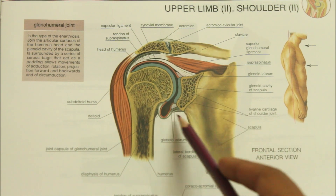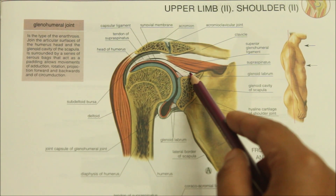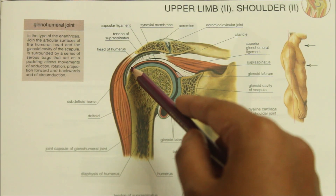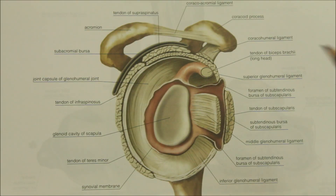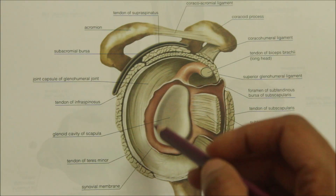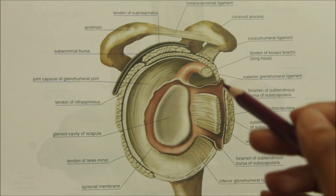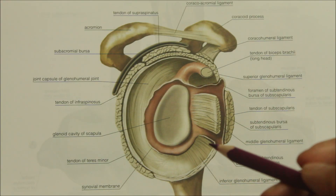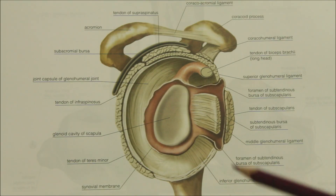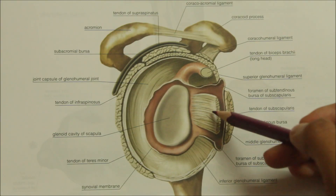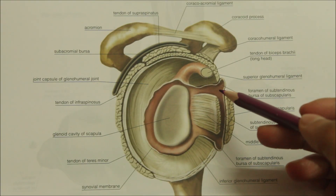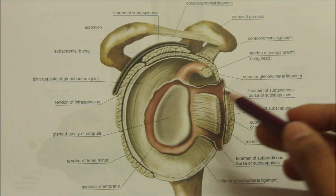Medially the capsule is attached to the scapula beyond the supraglenoid tubercle and also the margins of the labrum. Laterally it is attached to the anatomical neck of the humerus. Anteriorly, the capsule is reinforced by supplemental bands called the superior, middle, and inferior glenohumeral ligaments. The area between the superior and the middle glenohumeral ligament is a point of weakness in the capsule called the foramen of Weitbrecht, which is a common site of anterior dislocation of the humeral head.